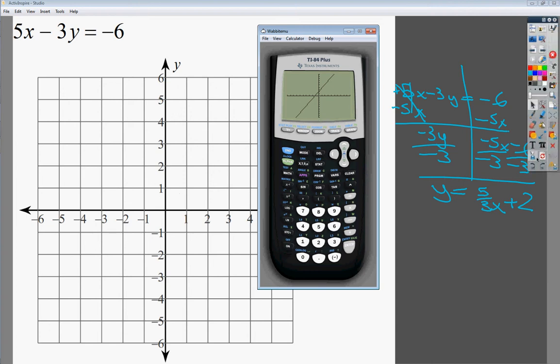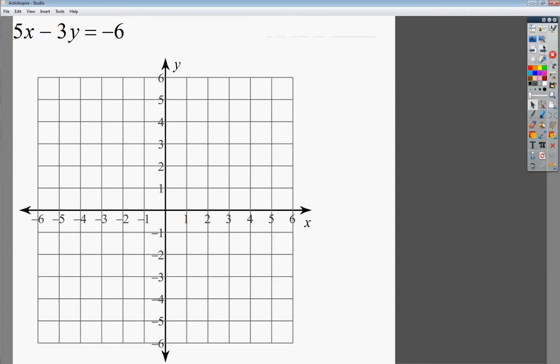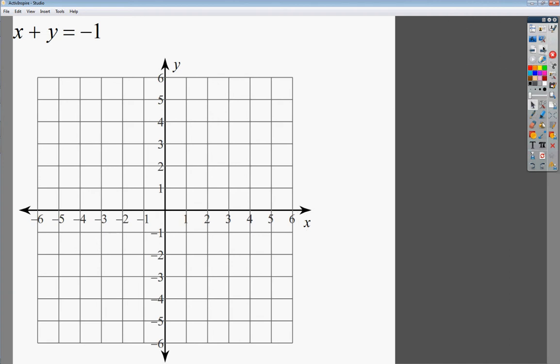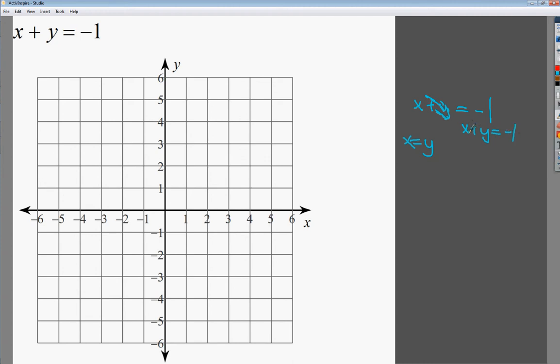The next one: x plus y equals negative 1. Do an intercepts method. I'm kind of going to cover this part up with my hand a little bit, and then I'll end up with x equals negative 1. And if I do it again and I cover this part up, it says y is equal to negative 1. So on the y, I go down to negative 1. On the x, I go down to negative 1. And I just draw my line.